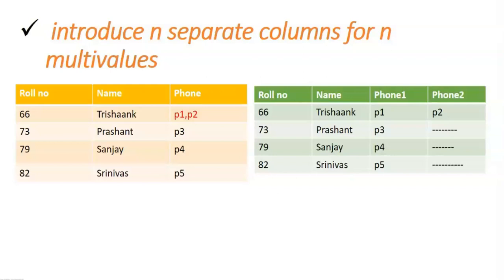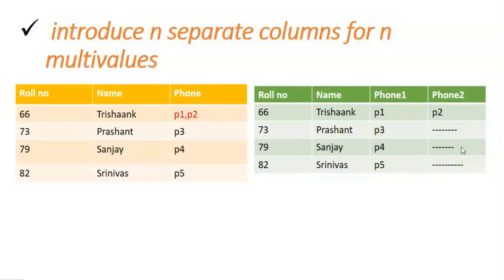In the third approach, you introduce separate columns for each of the multi-values. Suppose roll number 66 has two phone numbers. Introduce separate columns for phone 1 and phone 2 for all students, even if they don't have multiple values. For roll number 66, phone 1 and phone 2 have values, but for students 73, 79, and 82 who have only one phone, the phone 2 column remains empty. This is the third approach. We have discussed three approaches for achieving first normal form.